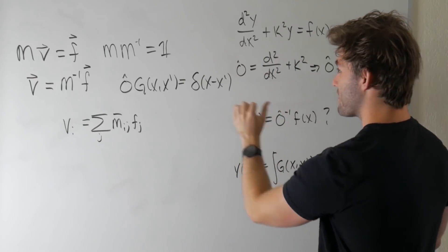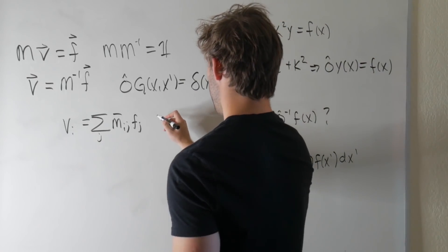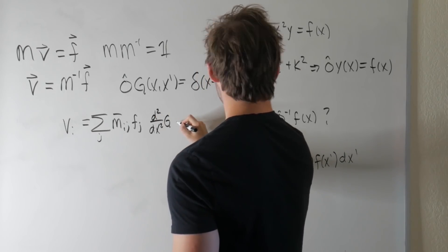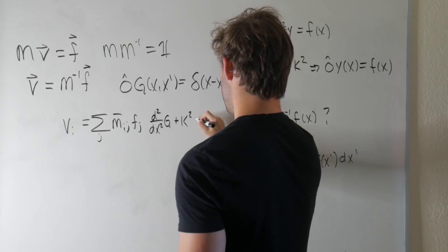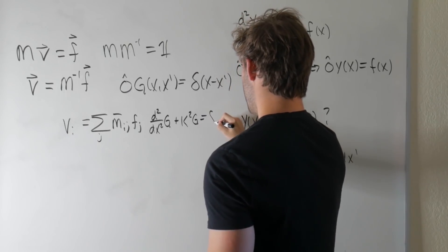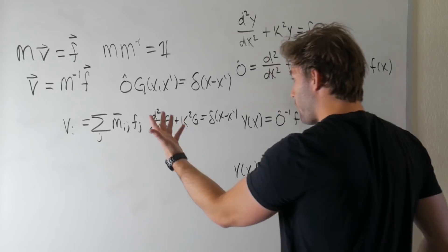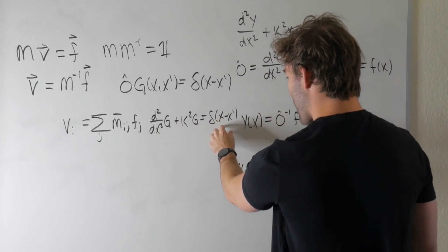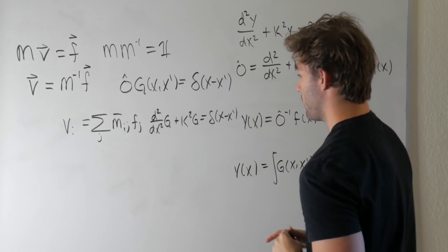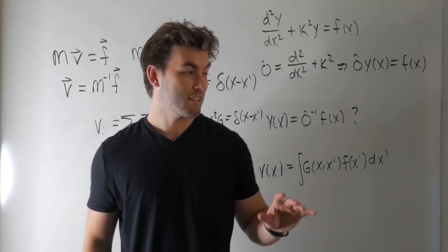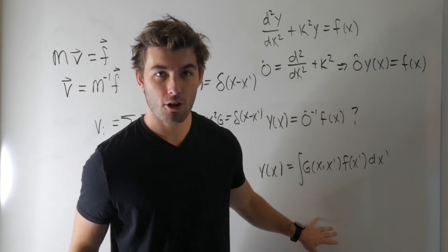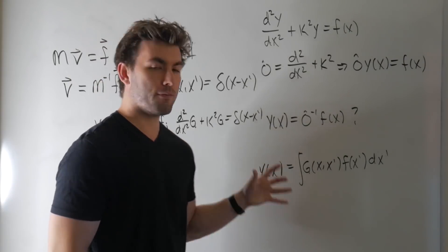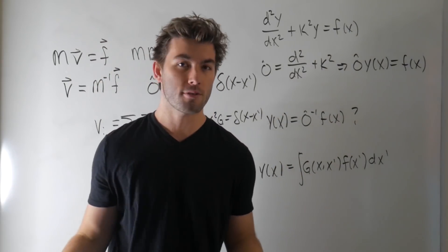So this is sort of the continuous analog to this here. And then, if we consider this case here, this is just another differential equation. So we have D squared DX squared G, plus K squared G, is equal to delta X minus X prime. So really what we did is we substituted one differential equation for another, where the force, the driving force term, is substituted for a delta function. The last thing that I want to mention is that Green's functions aren't uniquely determined until you impose boundary conditions. You're solving another differential equation. You can't fix those constants until you impose the boundary conditions.